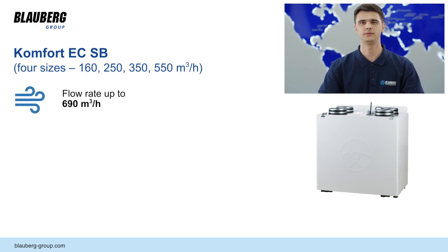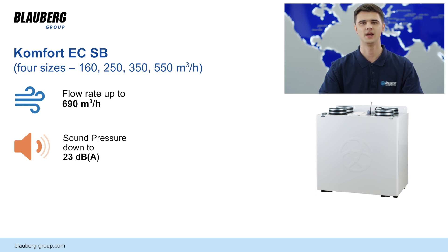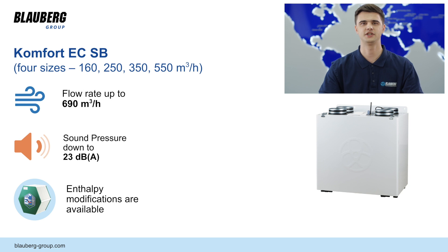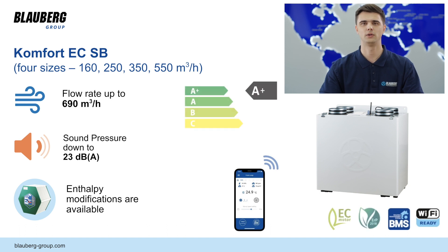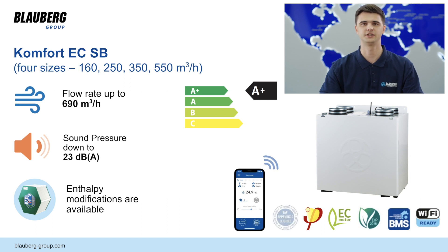The third family is Comfort EC-SB. The SB family has four sizes with flow rate up to 690 m³/h. The casing with 40 mm insulation and smooth inner ducts allows quiet and efficient operation. Enthalpy modification — which allows utilization of the latent energy of exhaust air — is available for all sizes. Smartphone application control and BMS connection are also available for all units in the SB family. With a high-efficiency counterflow heat exchanger, the SB family provides high-class, silent and effective ventilation in any residential premise. The Comfort EC-SB 350 is listed by the Passive House Institute, and the Comfort EC-SB 350 and 550 are listed for SAP Appendix Q.